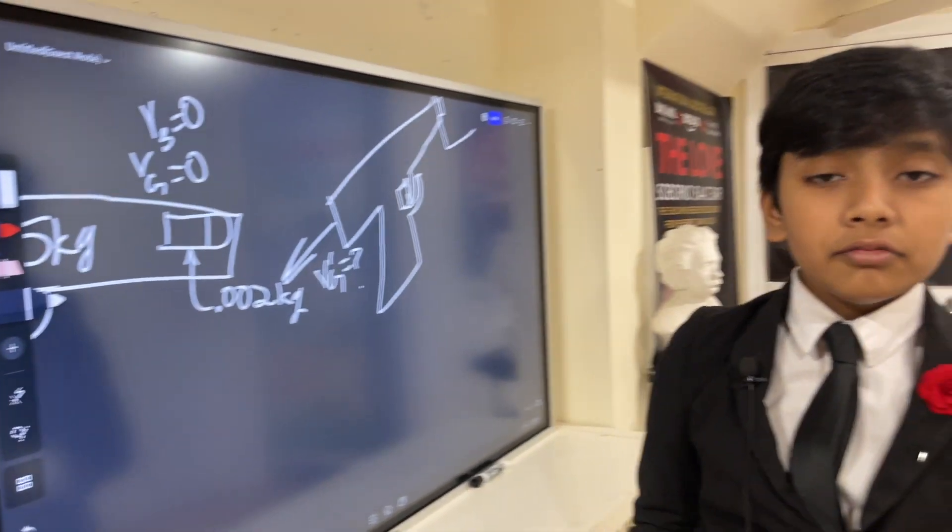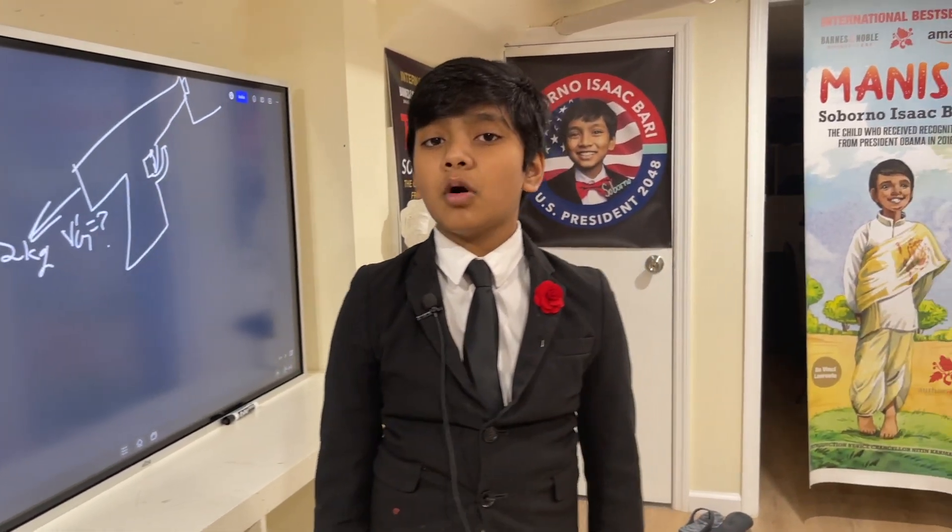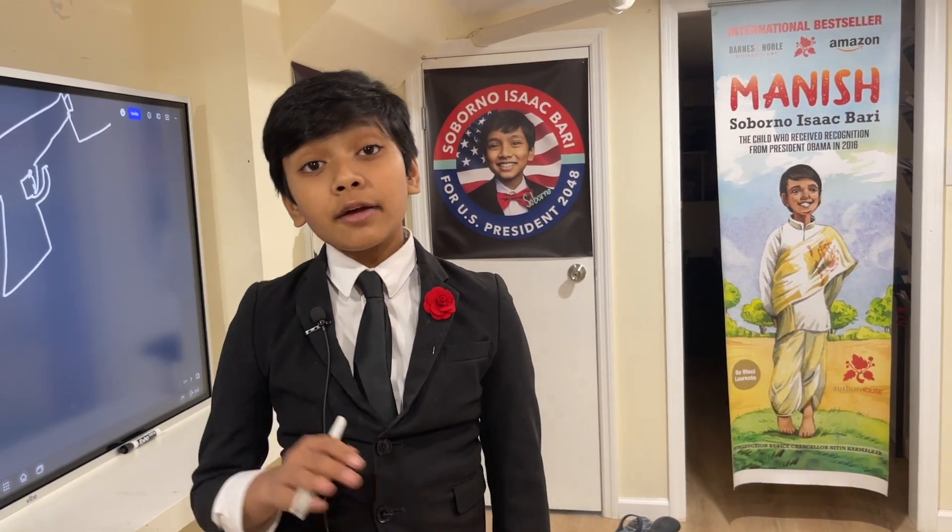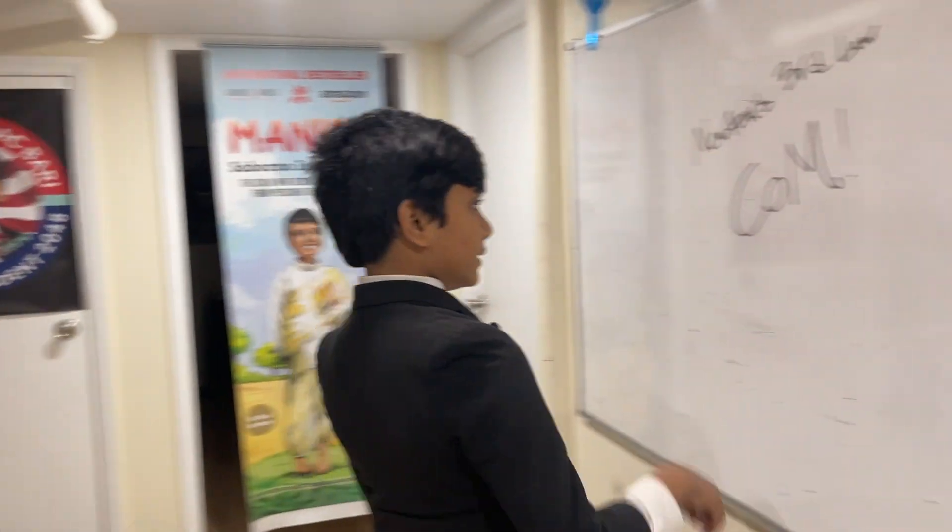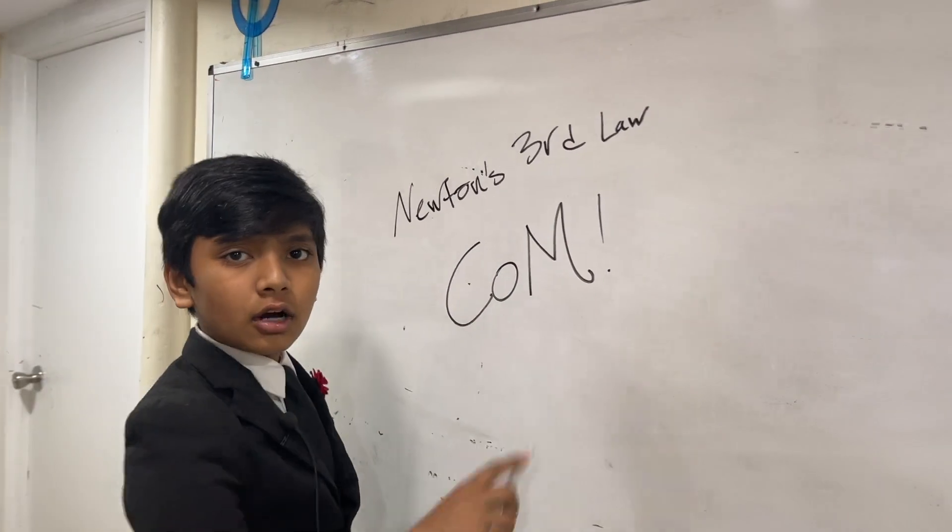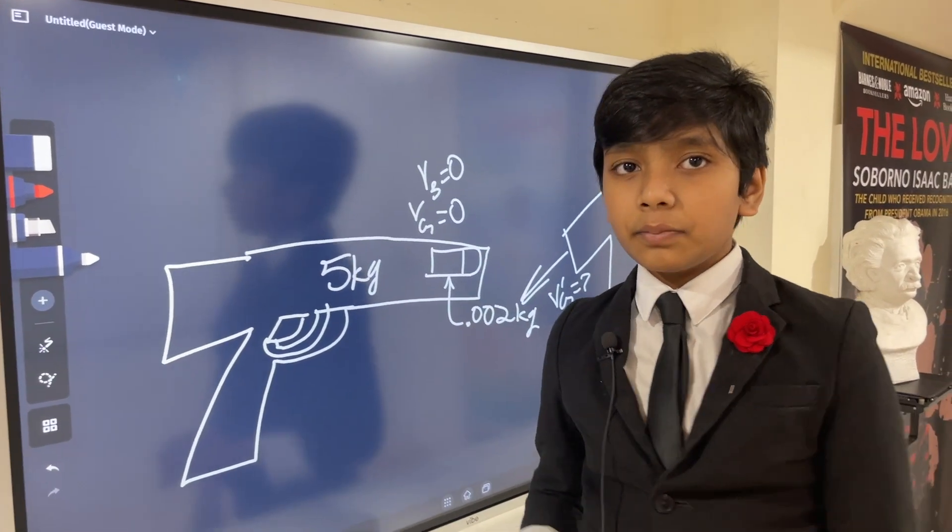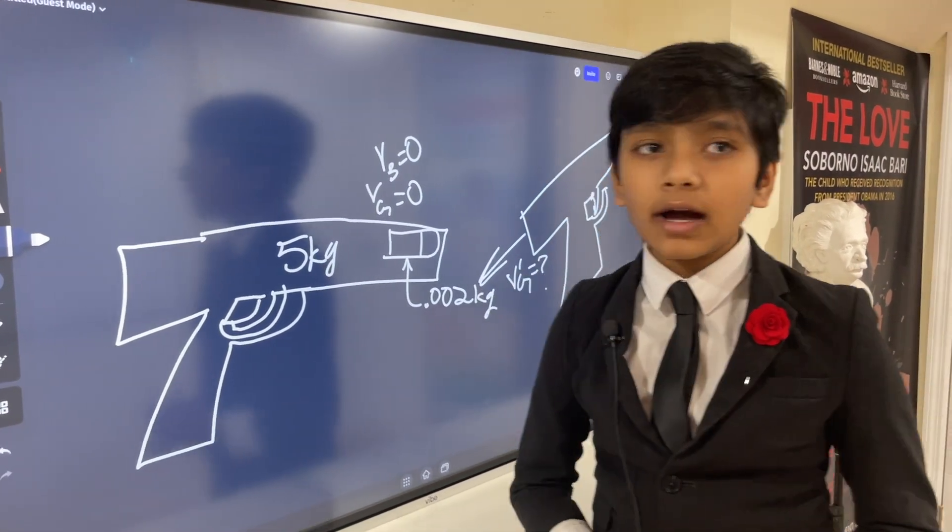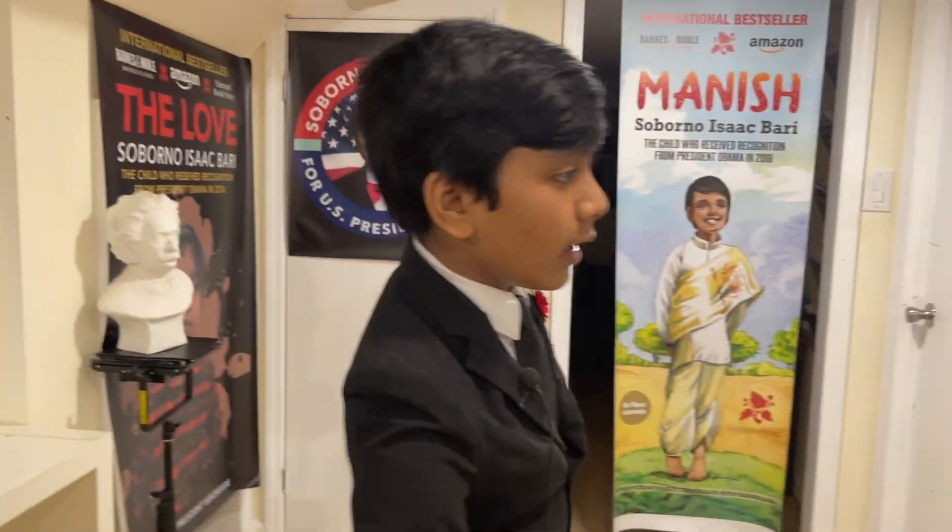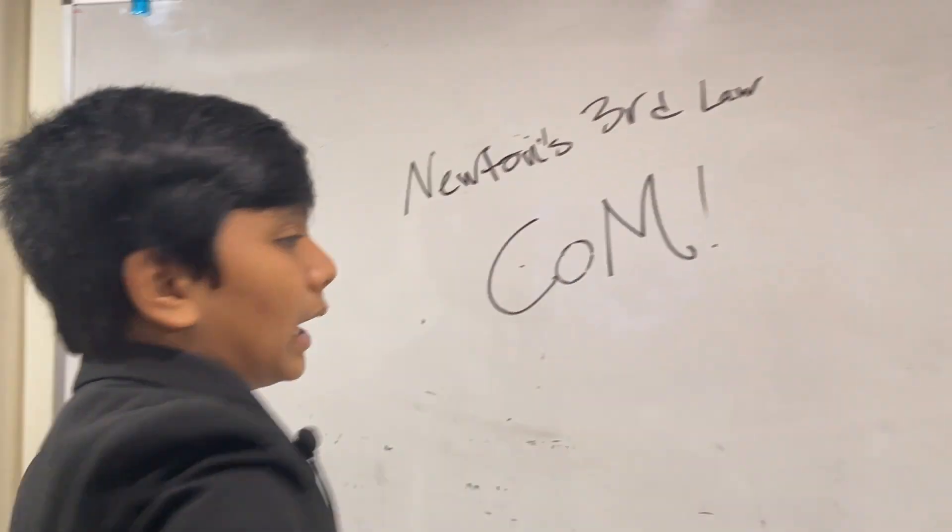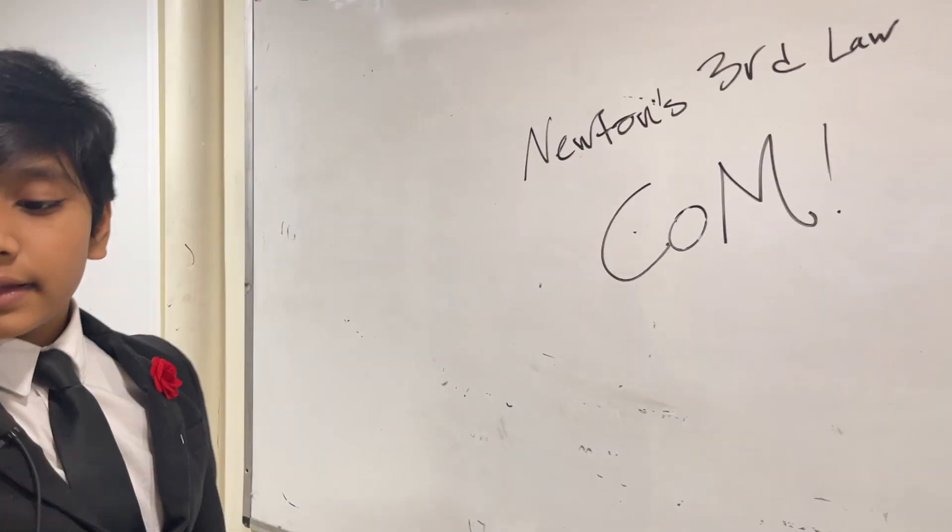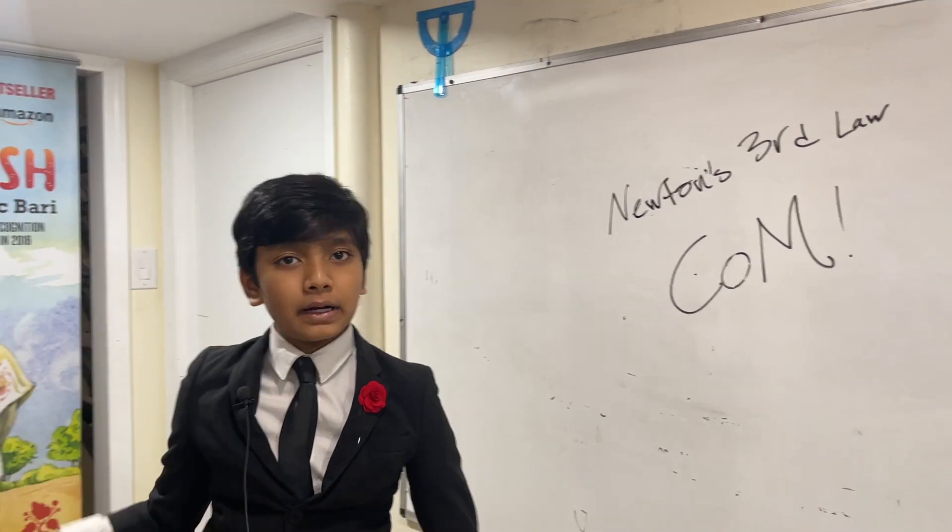Okay. Well, we can actually use conservation of momentum here. But first, I want you to see the relationship between Newton's Third Law and the conservation of momentum. Here, you might first realize that when the gun exerts a force on the bullet, the bullet exerts the same force back on the gun. So, if I, for example, punch the whiteboard, then the whiteboard punches back at me.